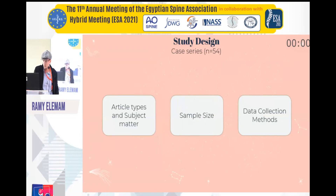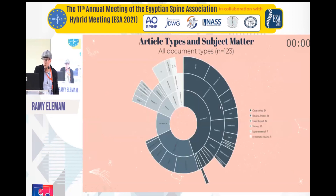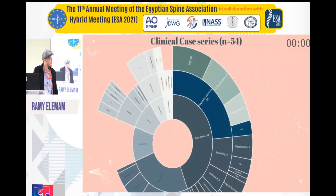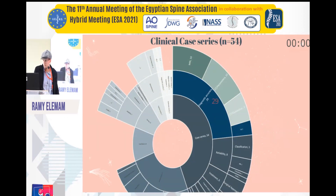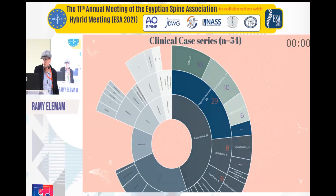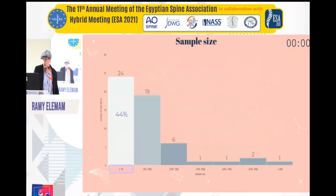This is a sunburst diagram covering all the different subject types and article types. Focusing on case series, the category was predominated by diagnostic accuracy with 29 publications, most of which focused on MRI diagnostic accuracy, followed by CT parameters and CT qualitative assessment.